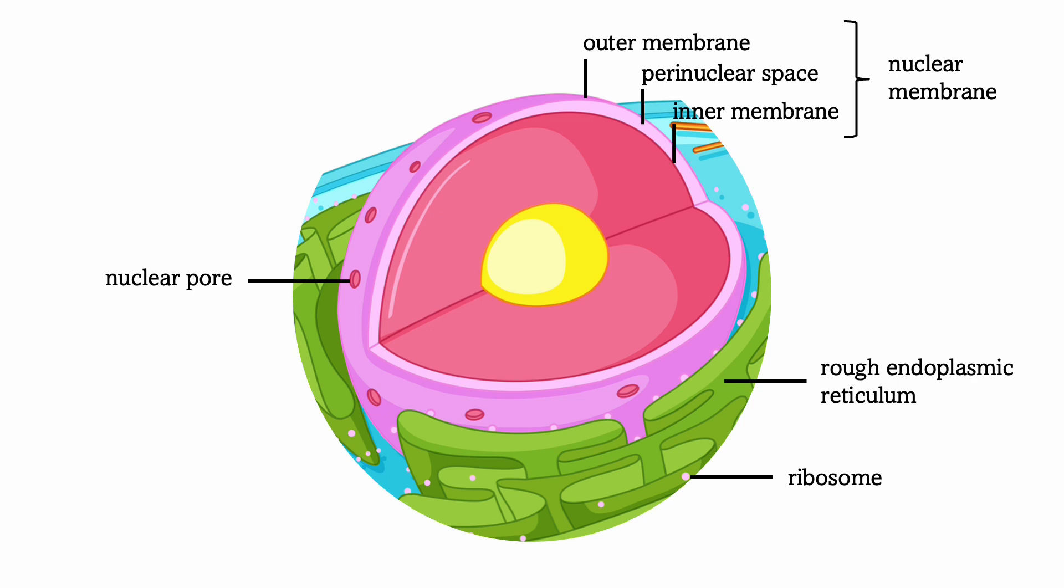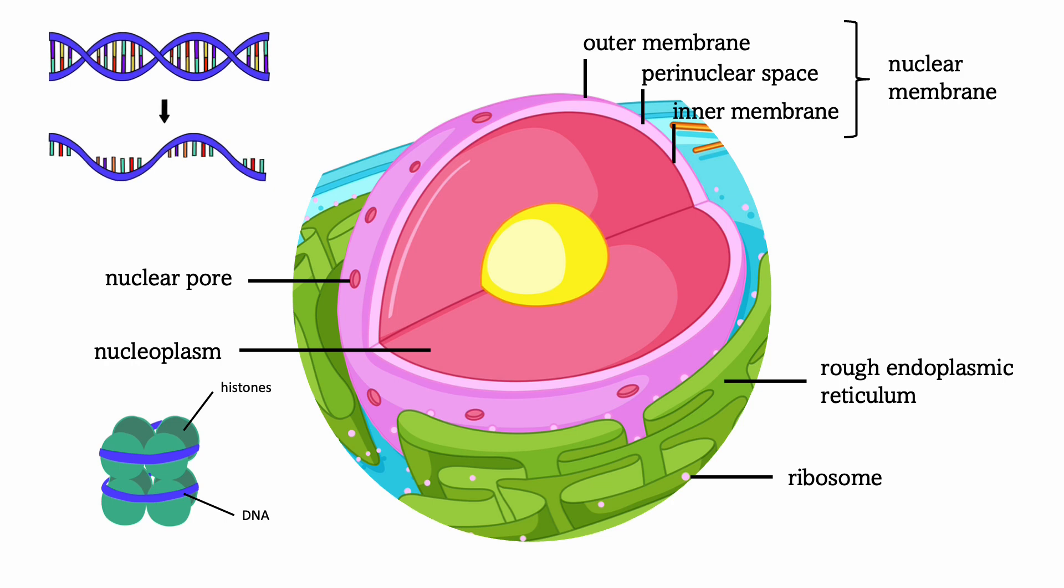The nucleus is filled with nucleoplasm and contains DNA combined with proteins called histones. The DNA can be transcribed into mRNA which is then shipped out of the nucleus.